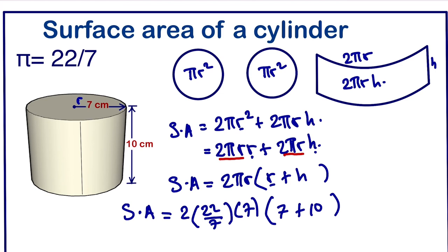If we simplify this, we'll be left with 2 times 22 which is 44 times, 10 plus 7 is 17. 44 times 17 is 748.